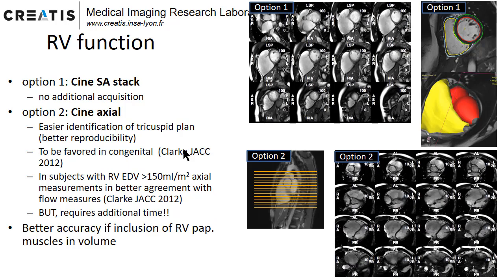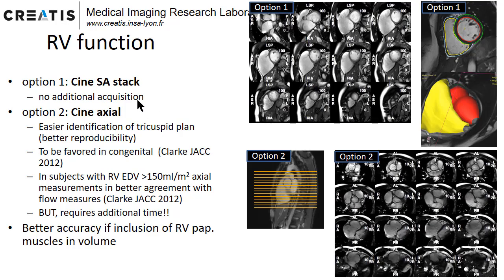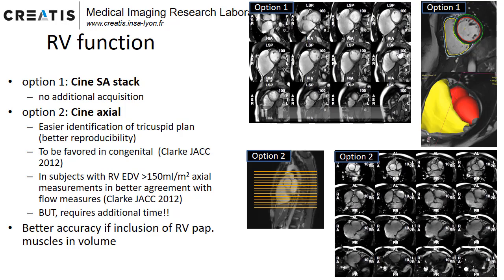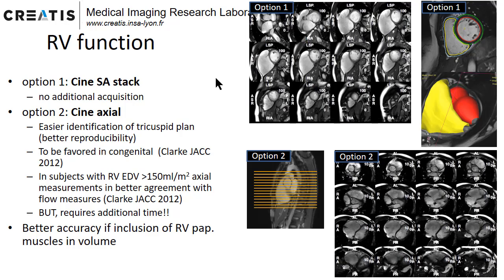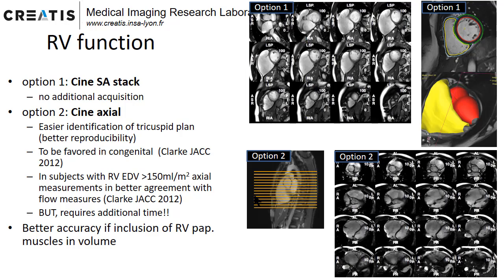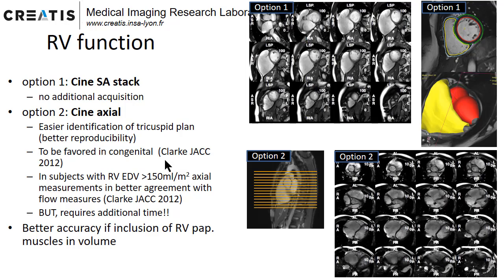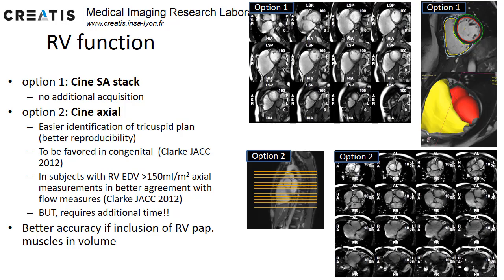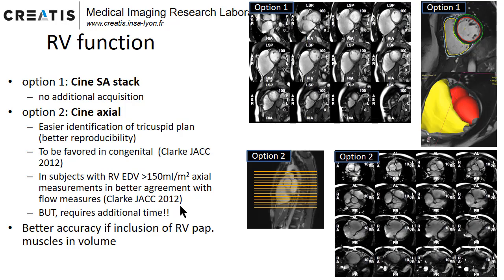What about RV function? There are different ways to do it. You can use the same short axis planes as long as you cover the whole RV wall — a CINE short axis stack with no additional acquisition — and then contour the RV. Alternatively, you can do axial transverse planes covering the whole heart for the RV side, which provides better reproducibility and should be favored in congenital heart disease and very large RV. However, this requires additional acquisition time.